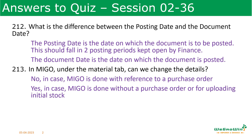In MIGO, under the material tab, can we change the details? There are some details which we can change and some which we cannot. Under the material tab there are two possibilities: we cannot change the material if MIGO is done with reference to a purchase order. We can change the details if MIGO is done without a purchase order or for uploading initial stock. Sometimes you may be able to change the material, sometimes you may not.